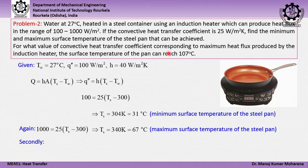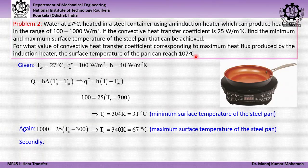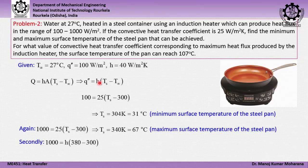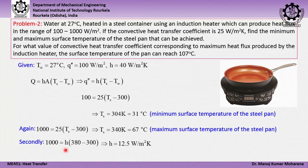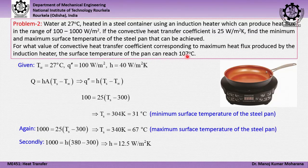For the second part, we find h when the maximum heat flux is 1000 W/m² and the surface temperature reaches 107°C (380 K), with T∞ = 27°C (300 K). Substituting into q″ = h·(Ts − T∞) gives h = 1000 / (380 − 300) = 12.5 W/m²·K. So the convective heat transfer coefficient under these conditions is 12.5 W/m²·K.